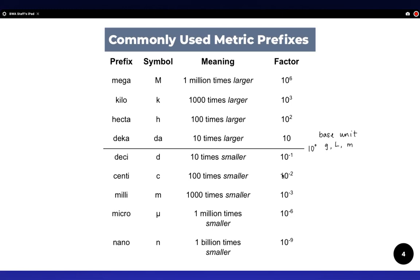Okay, so everything above this line is larger than the base unit. We've got mega, which is a million times bigger, 10 to the power of 6.